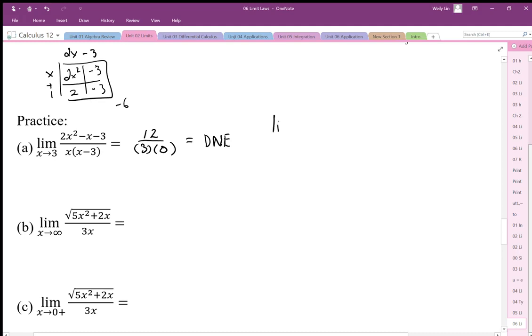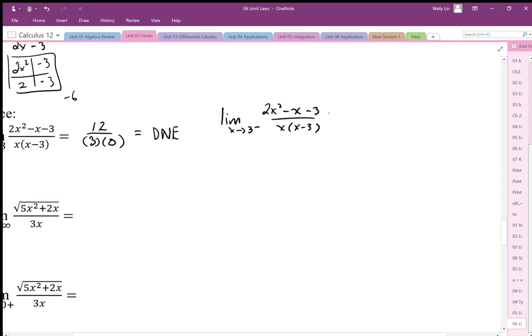Just to clarify, if I were to change this problem to x equals 3 from the negative side of 2x² - x - 3, what would end up happening is I would end up with 12 over 3, and then this 0 would be from the negative side, so I'd end up with negative 0. So this would be negative infinity, because if I divide by 2.999 minus 3, that's a negative number.